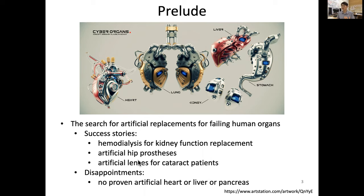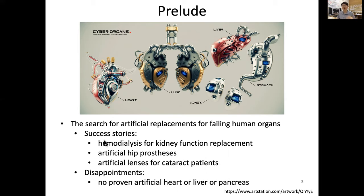Another success story is the artificial hip prosthesis — we now have artificial hips. Also, for people who have a problem with the eye lens, there are artificial lenses for cataract patients. Cataract is a condition where the lens becomes opaque so the patient cannot see. This cataract surgery is one of the most common surgeries. However, these are good success stories but are limited.